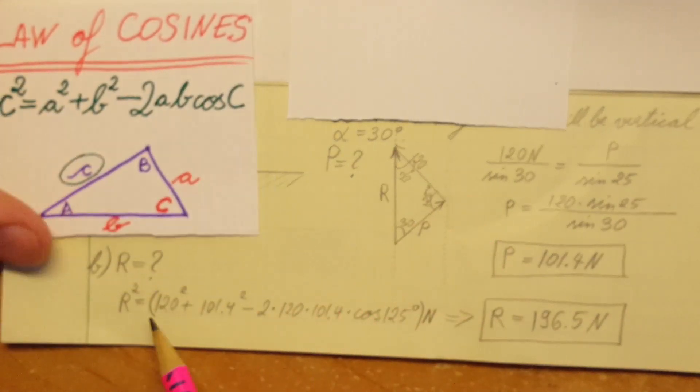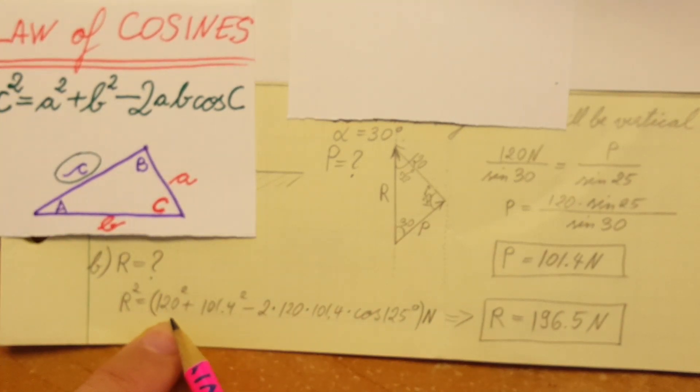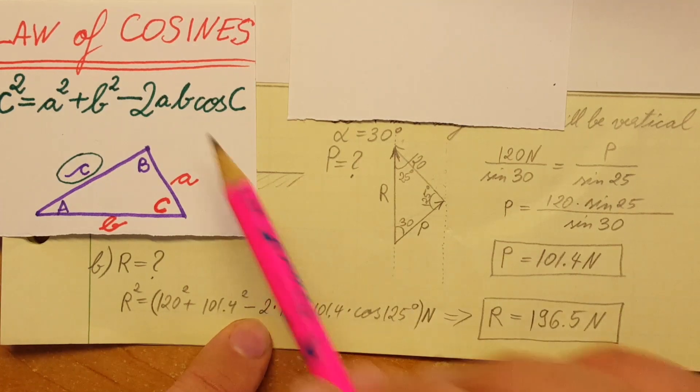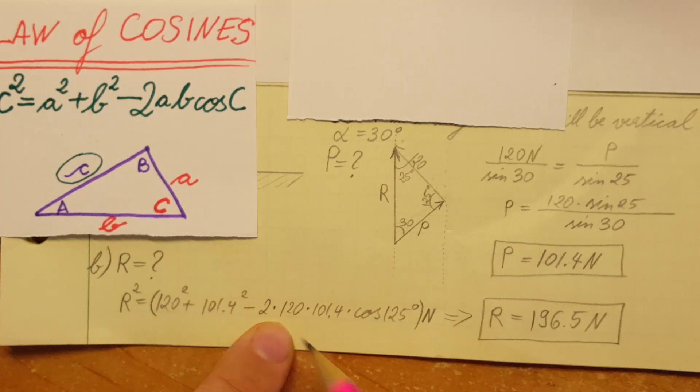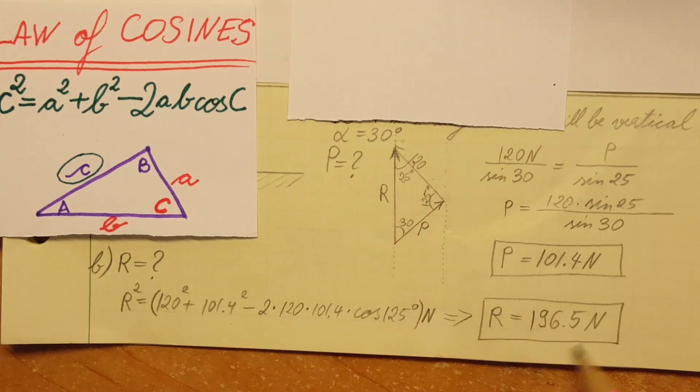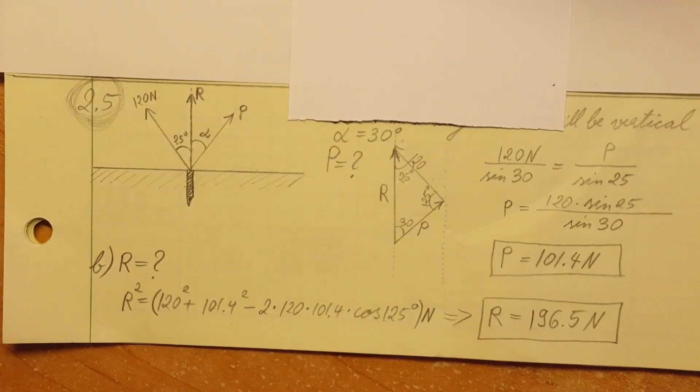Okay, now we are interested in R, so we're gonna write up law of cosines. We're going to have the square root of the square of 120 plus the square of P, which we calculated right here, 101.4, on the square, minus 2 times 120 times 101.4, and then cosine of the angle between these two, which we calculated to be 125 degrees.